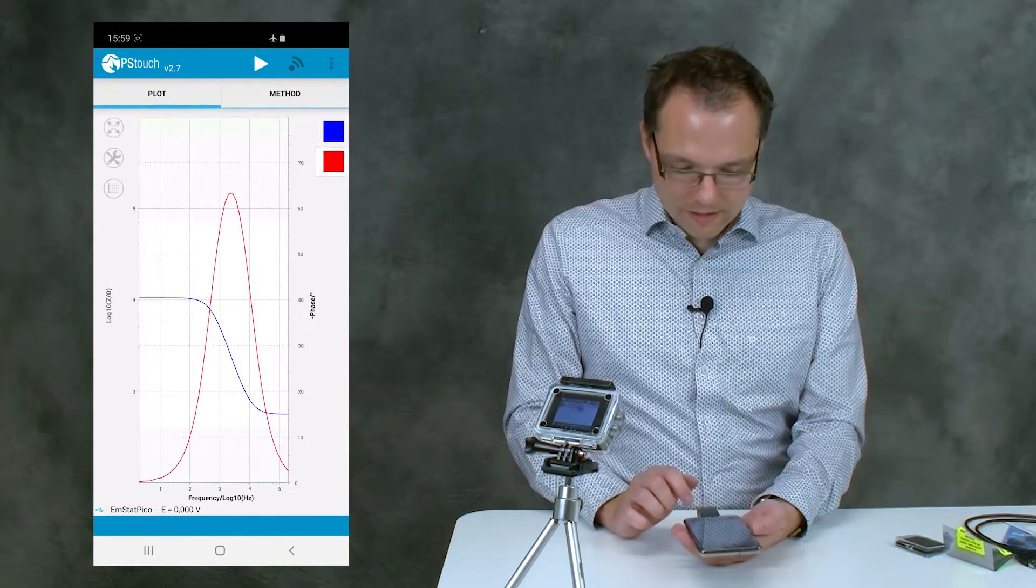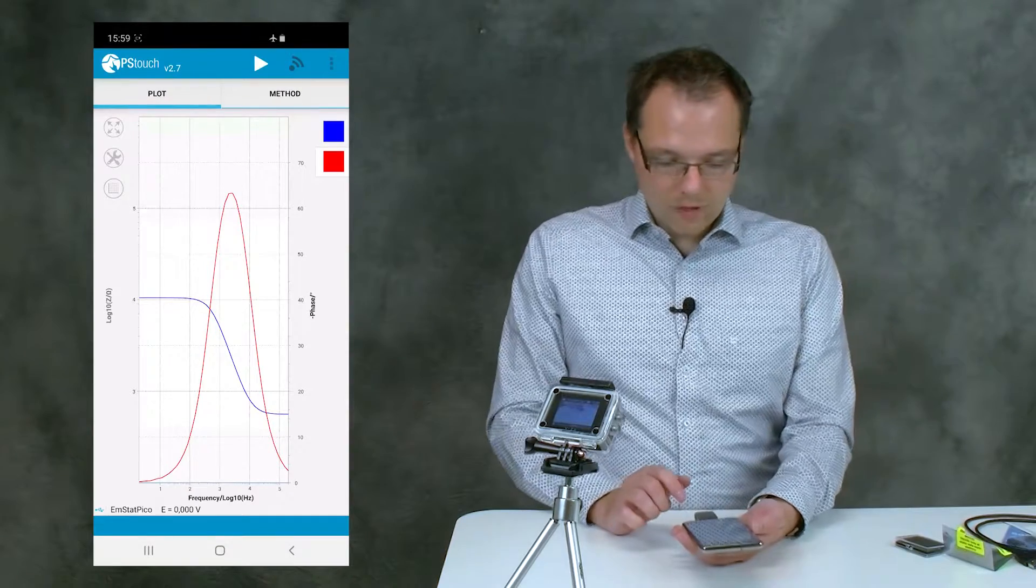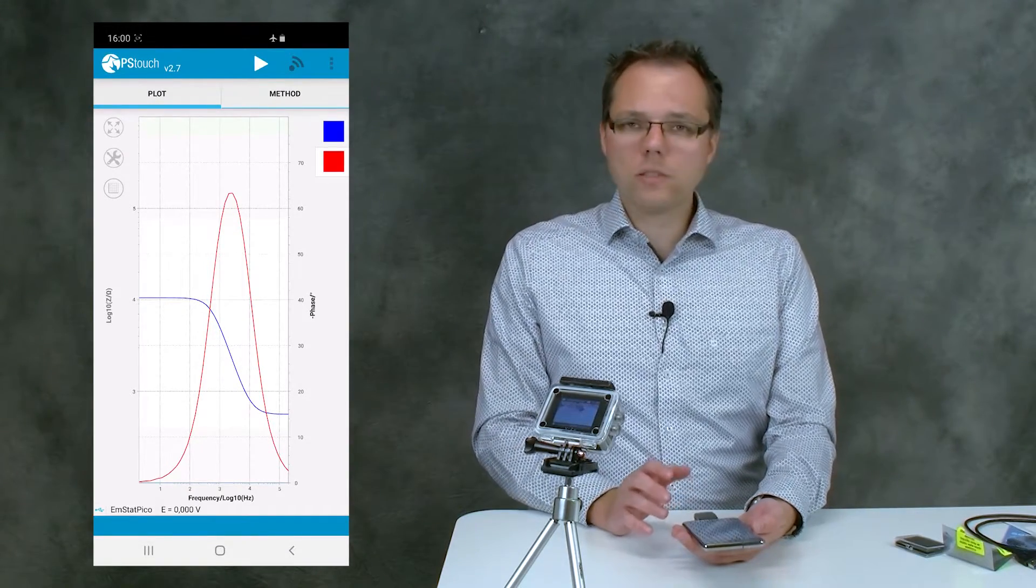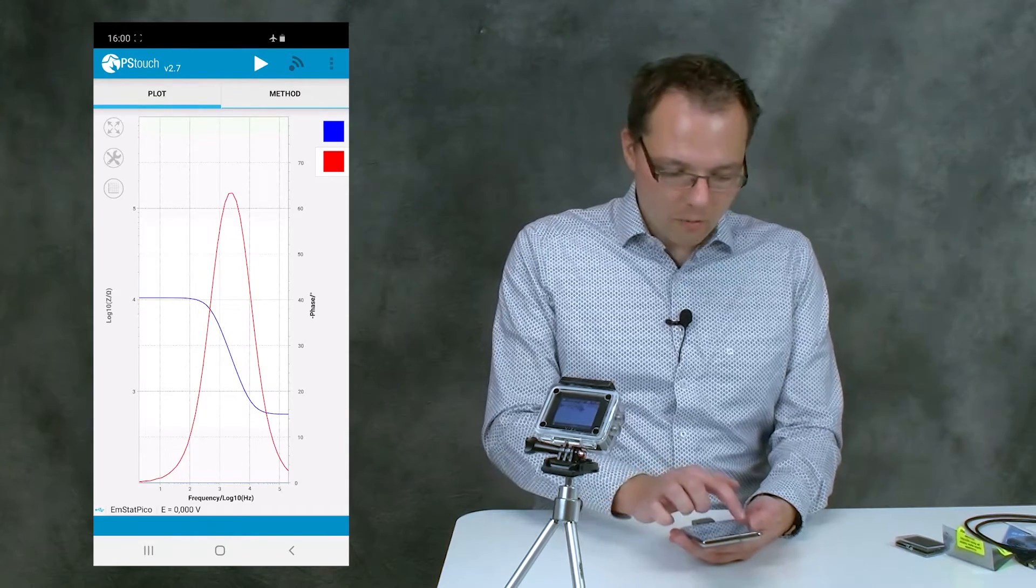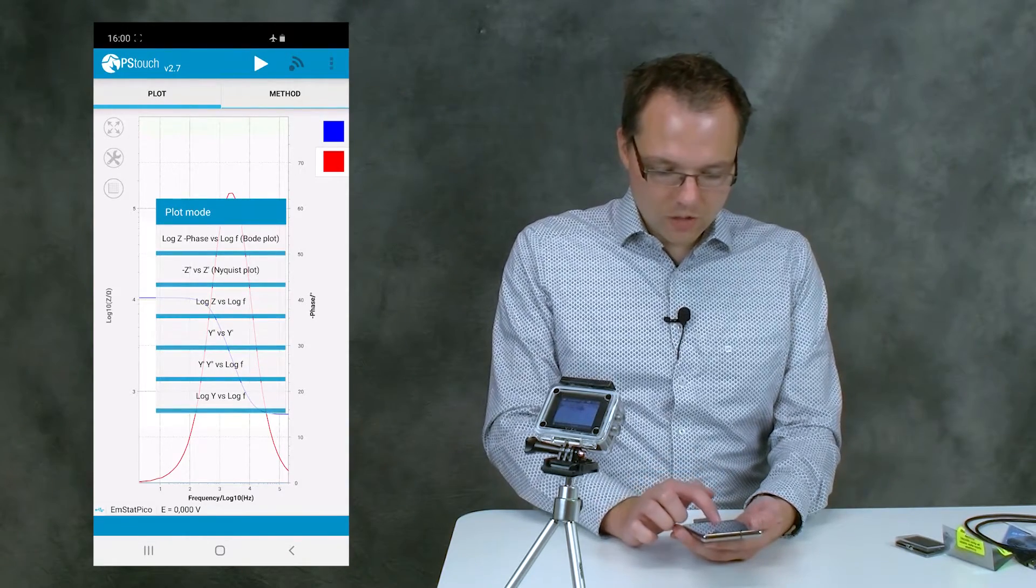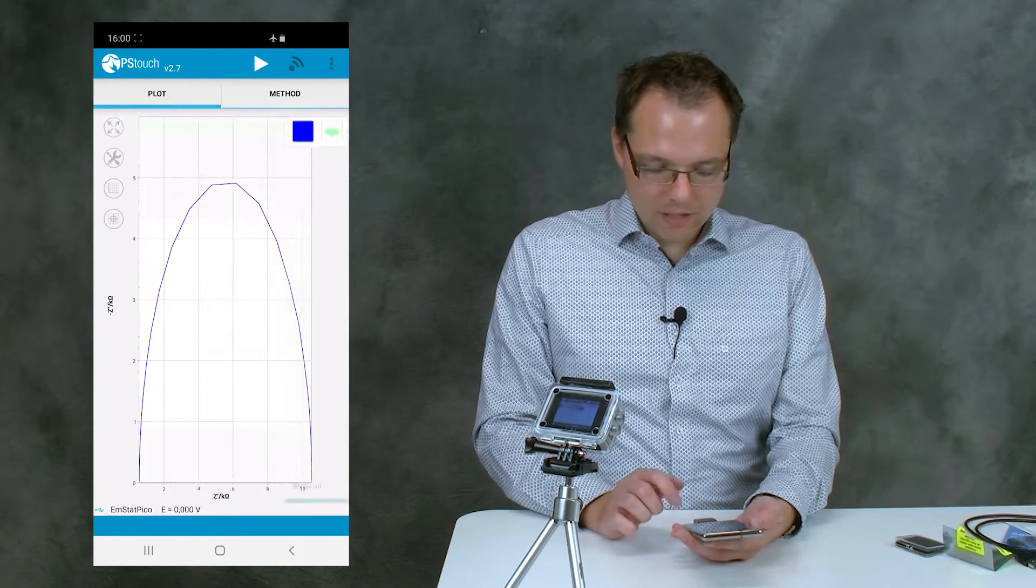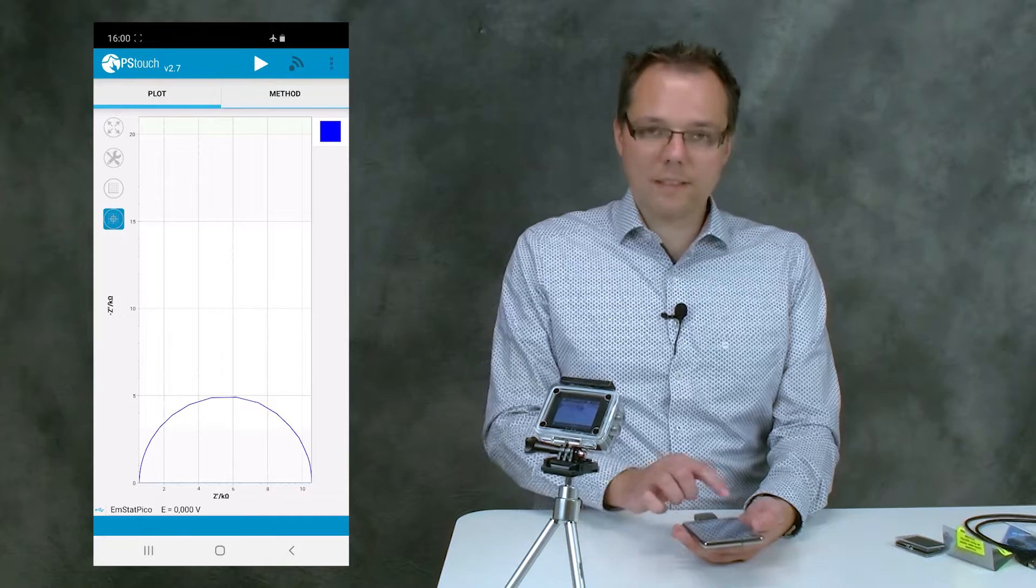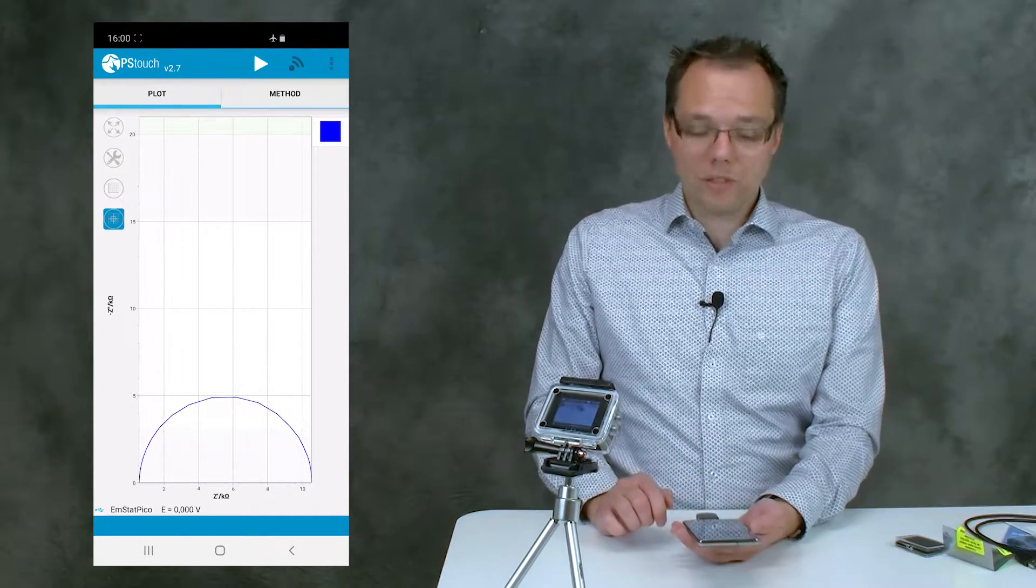So now you see that the measurement was loaded. For a few of you, it might be like, oh, this is a Bode plot. That's usually not what I'm using. Well, you can already switch that here to the Nyquist plot, and that's maybe something you're more used to. And if you press the equal axis scaling, then you see the semicircle that you're used to.